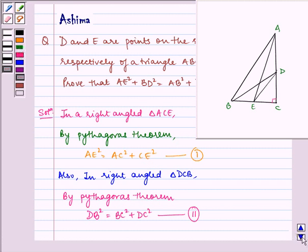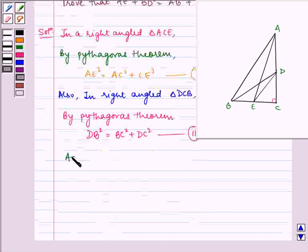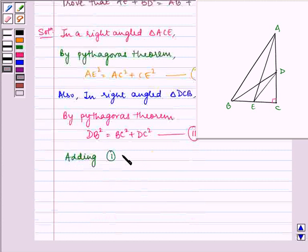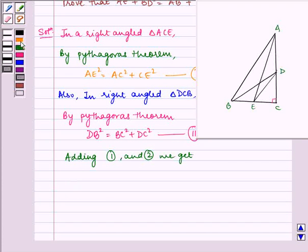Adding 1 and 2, it implies AE square plus BD square is equal to AC square plus CE square plus DC square plus BC square.